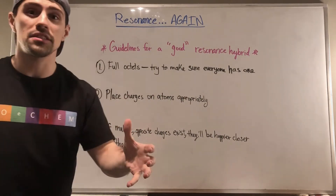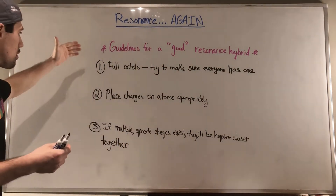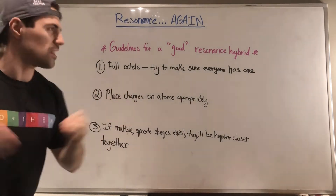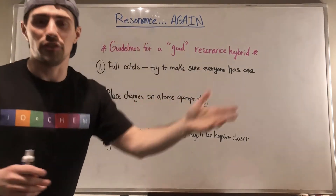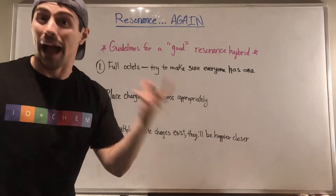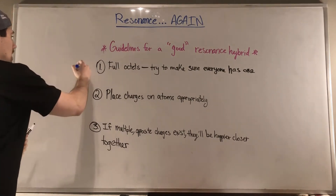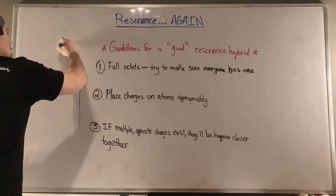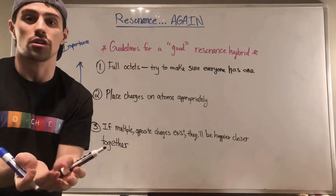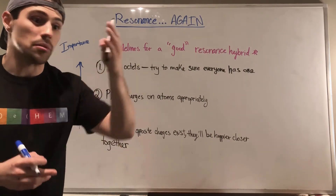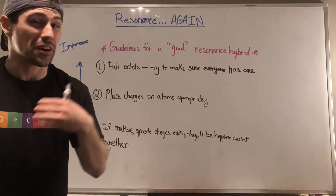Let's talk about some guidelines when looking at resonance hybrids — these are what will help you determine if something is a good or bad hybrid. The three golden guidelines go from most important to least important. The most important rule — your main objective above all else — is to try to get everyone to have an octet in your structure. If everyone has eight electrons, even if there's some blemish with rules two and three in a given resonance structure, that one will reign supreme because we need to make our atoms happy with a full octet.